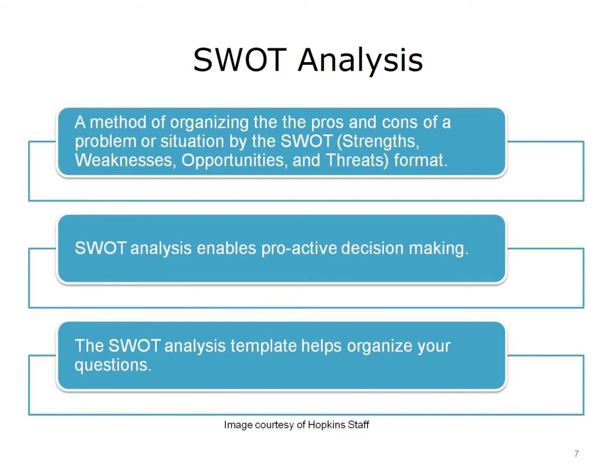In a SWOT analysis template, each letter — the S, the W, the O, and the T — are placed in one cell of a four-cell grid. Generally, each cell contains a series of questions that have been predetermined to help organize thinking and assessment. Some examples of these questions or aspects that are frequently assessed in a SWOT can be seen on the next slide.